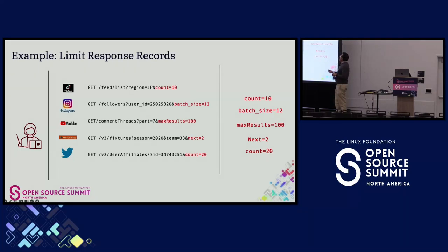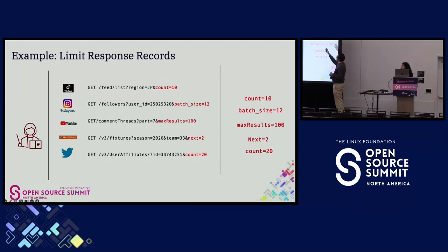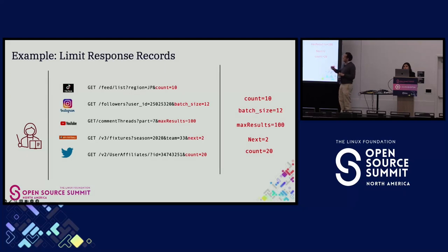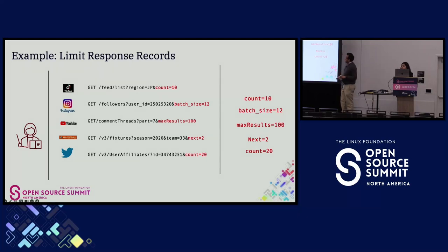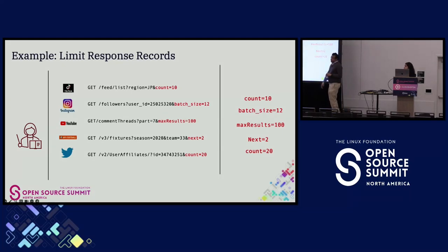Maybe the application programmer was diligent and did proper checks so that if you send in 1 million, the application developer already limits the response to no more than 100. But that guarantee is often not available to us in many organizations. Administering a large cluster with many applications, I don't know if every developer has done something similar. So I'm concerned about all of these parameters and want to enforce an upper limit. Even if a developer set a limit of 10,000, as an administrator I might only want 100, so I'd like that flexibility.